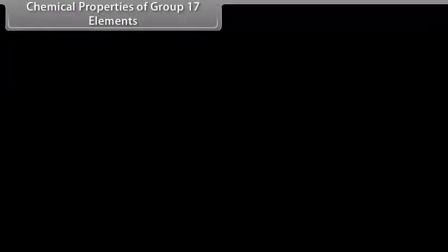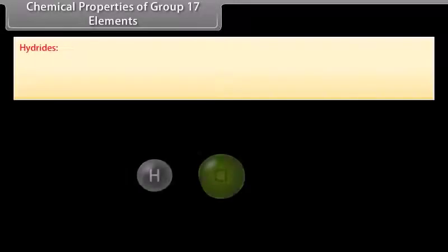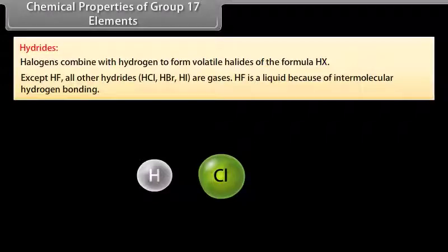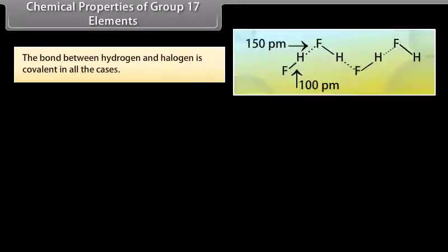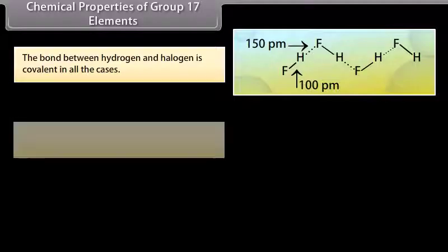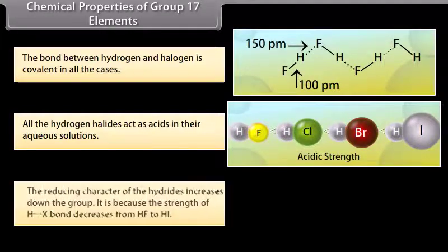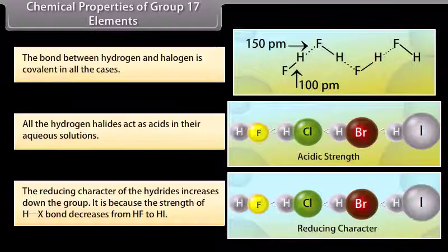Chemical properties of Group 17 elements — Hydrides: Halogens combine with hydrogen to form volatile halides of formula HX. Except HF, all other hydrides — HCl, HBr, HI — are gases. HF is a liquid because of intermolecular hydrogen bonding. The bond between hydrogen and halogen is covalent in all cases. All hydrogen halides act as acids in aqueous solution, ionizing to give H⁺ and halide ion X⁻. The reducing character of the hydrides increases down the group because the strength of the H–X bond decreases from HF to HI.